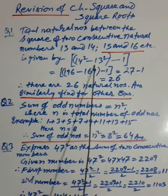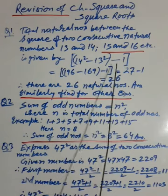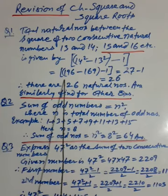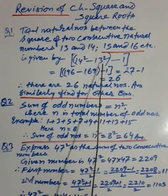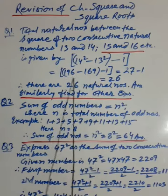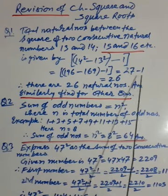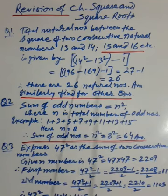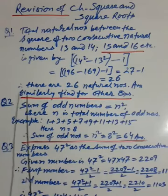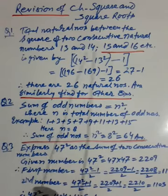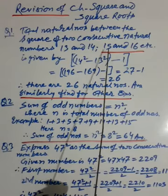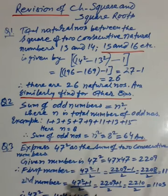So here 14 and 13 are given, so 14² minus 13² minus 1. 14² is 196, minus 169, minus 1. 196 minus 169 is 27, minus 1 that is 26. So there are 26 natural numbers lying between the squares of these two natural numbers. Similarly you can find for 15 and 16, 18 and 19, and so on for any two consecutive natural numbers.